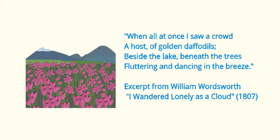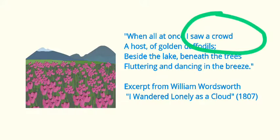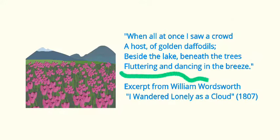I see personification in a couple of places. First, in the first line, 'I saw a crowd' — what do we normally think of when we talk about a crowd? A crowd of people. How about 'fluttering and dancing in the breeze'? Dancing is something that a person normally does, and here he uses it to describe the movement of the flowers in the breeze. Quite beautiful, don't you think?